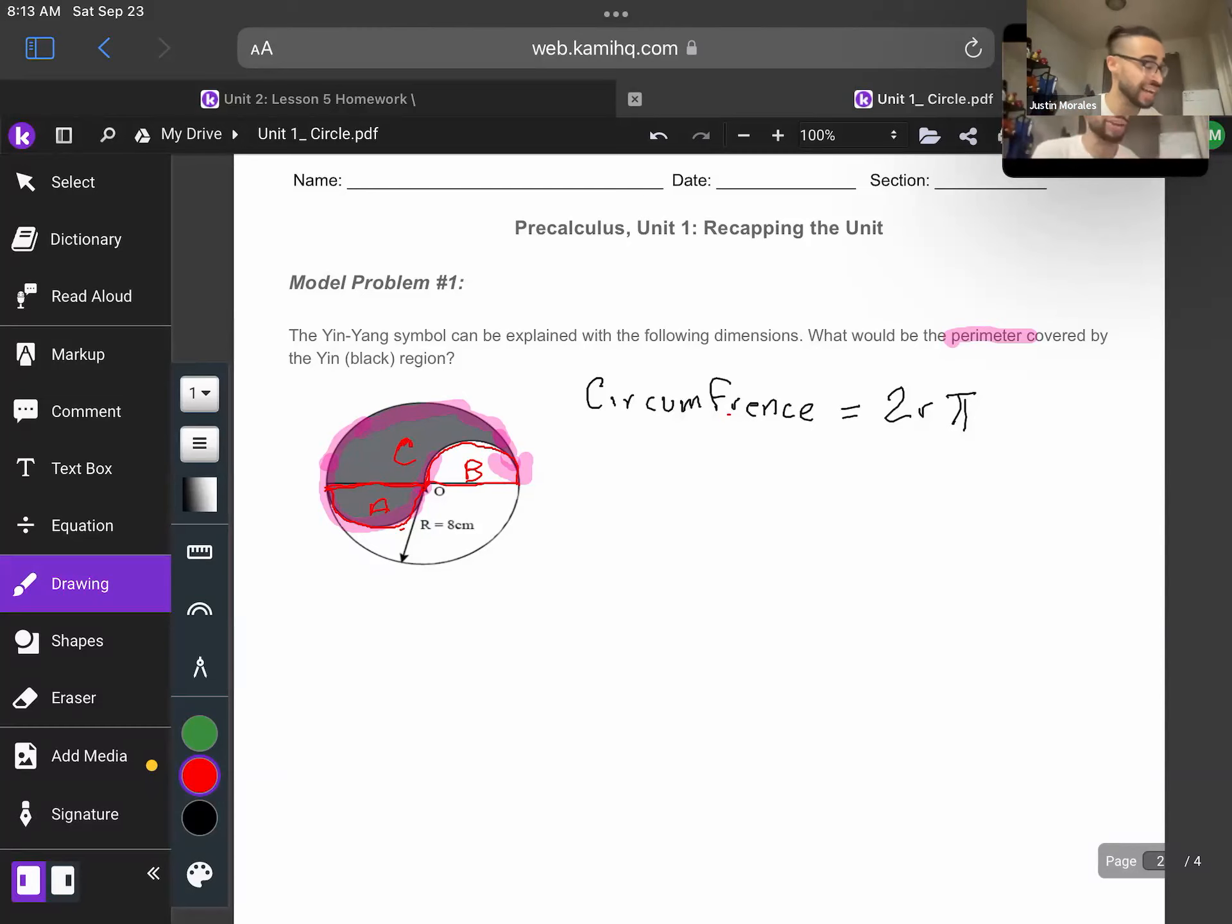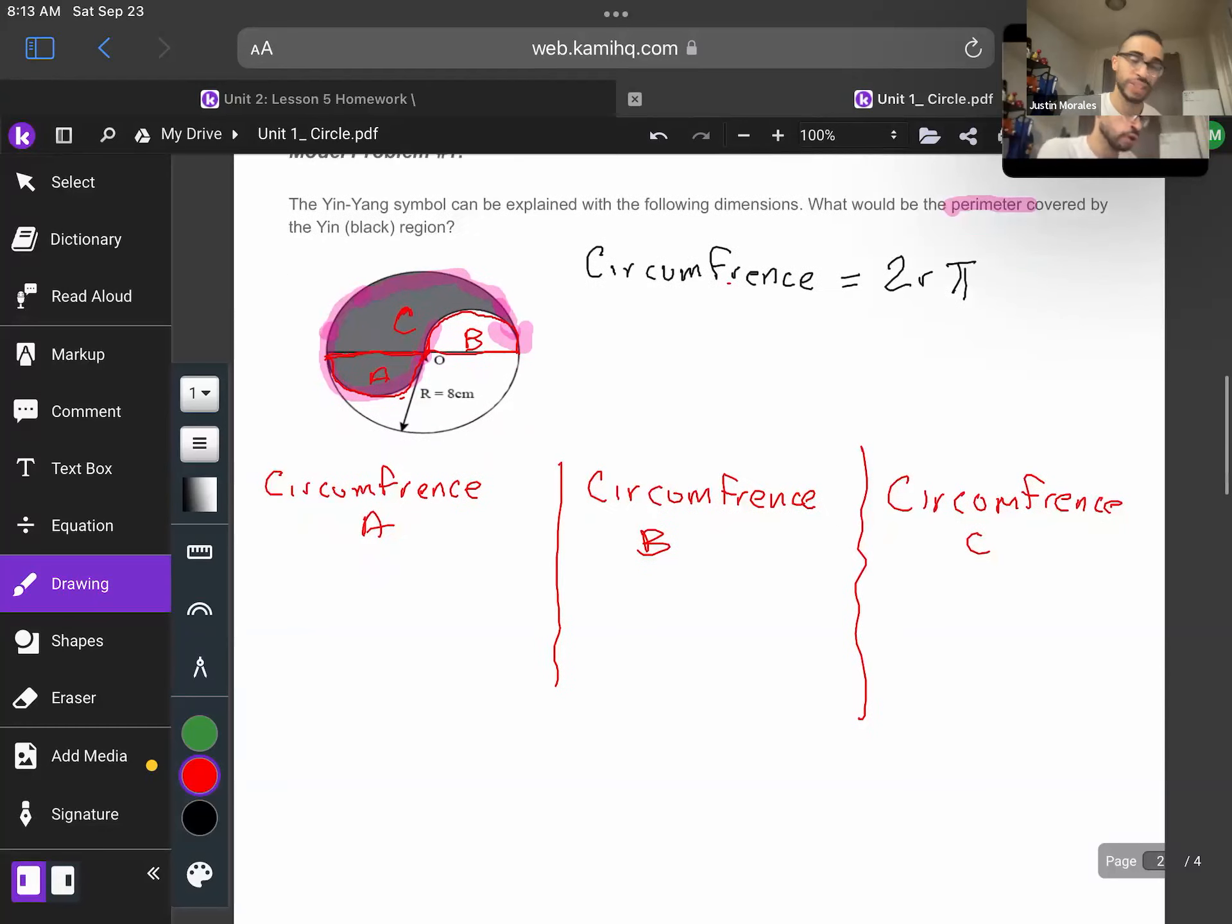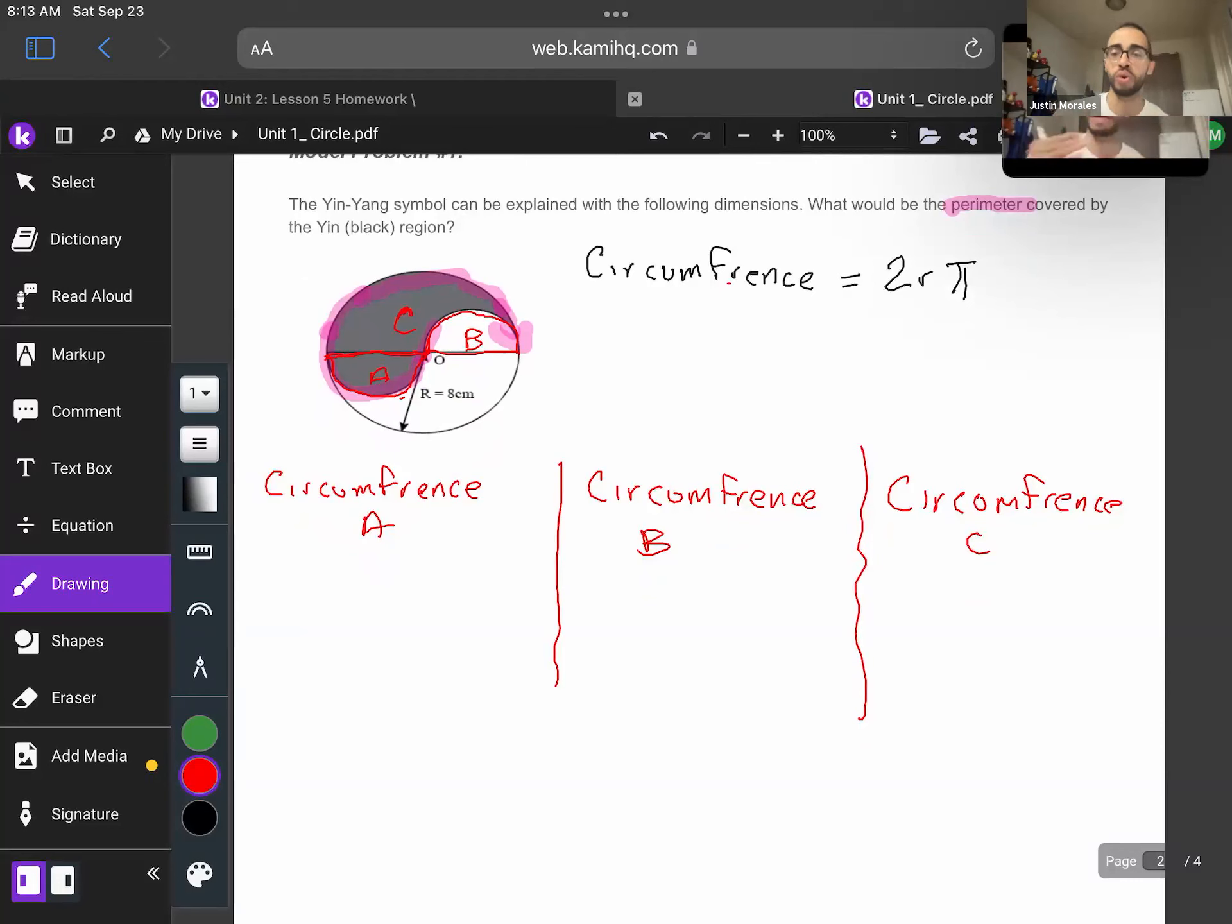So once again, neat and organized work. As you already see, I'm labeling these semicircles. I'm not just saying, oh, I have one there. I have one there and one here. I'm labeling them A, B, and C. So I'm going to go ahead and split my page as such. So we're going to have circumference of A, circumference of B, and last but not least, circumference of C. So once again, just trying to make my work neat and organized. I'm meeting my own standards, so I expect you to meet them as well.